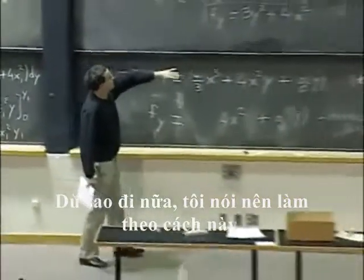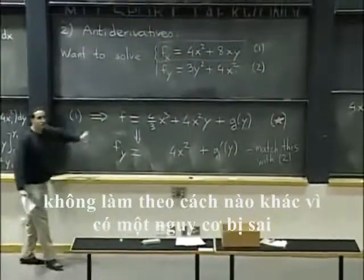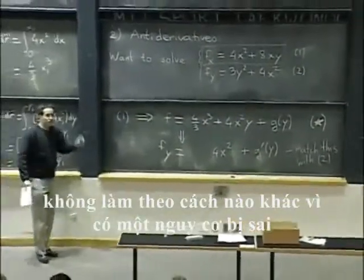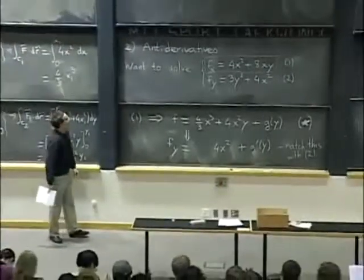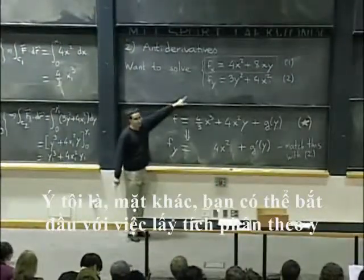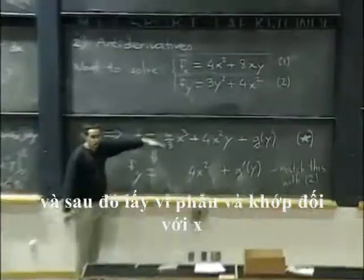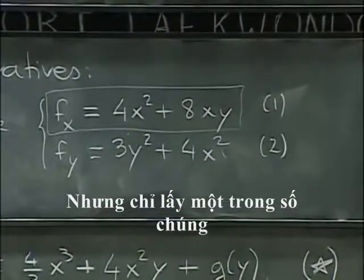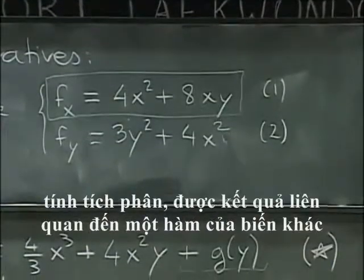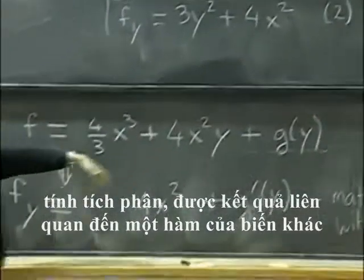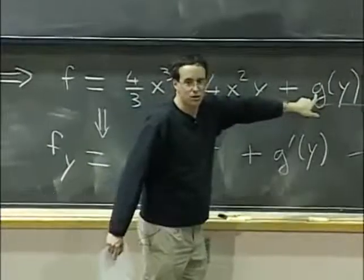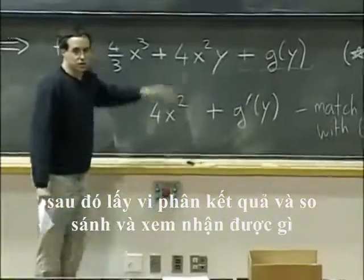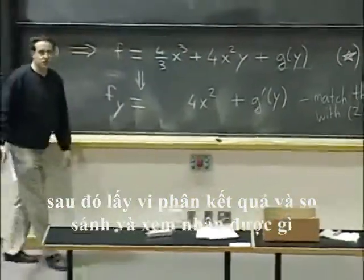OK, so anyway, so I'm saying, you know, do it this way. Don't do it any other way because there's a risk of making a mistake otherwise. I mean, on the other hand, of course, you could start with integrating with respect to y and then differentiate and match with derivative with respect to x. So what I'm saying is just, you know, take one of them, integrate, get an answer that involves a function of the other variable, then differentiate that answer and compare and see what you get.